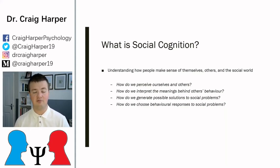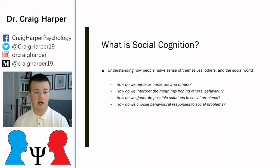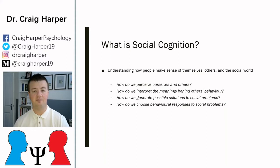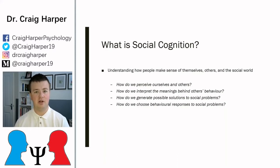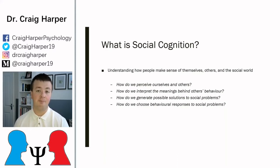How do we process information within a social environment? How do we interpret the meanings of other people's behavior? This goes back to ideas of mental scripts — do we infer different attributions or different mental states based on specific behaviors enacted by other people?